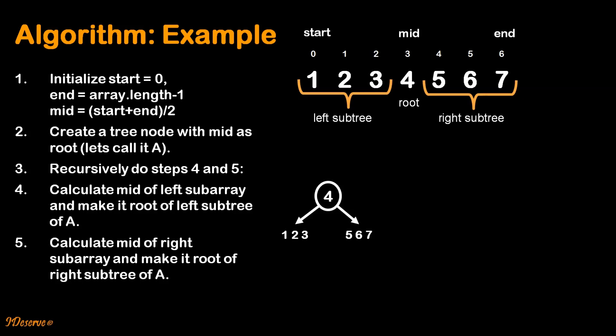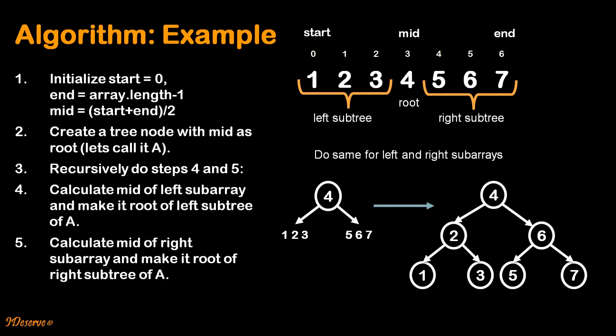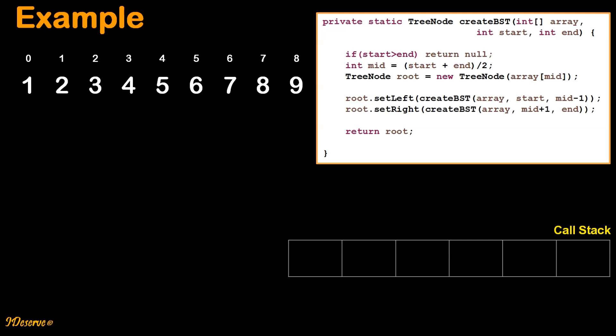Now do the same for the left and right sub-arrays. For the left sub-array of 4, 2 is the mid element, so we make it the root of the left subtree of 4. Then 1 becomes the root of the left subtree of 2, and 3 becomes the root of the right subtree of 2. Similarly, we create the right subtree of 4 with 6 as root. We will visualize the algorithm through a simple animation.